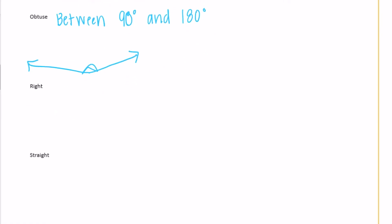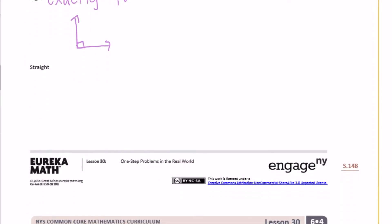A right angle is exactly 90 degrees — it basically looks like a corner. So that right there is exactly 90 degrees. And then a straight angle is exactly 180 degrees, so it's exactly what it sounds like — it is just a straight line. You can just draw a line. That is a straight angle.